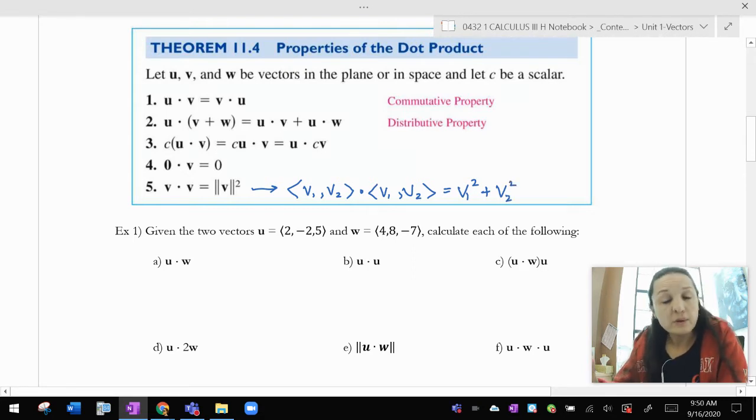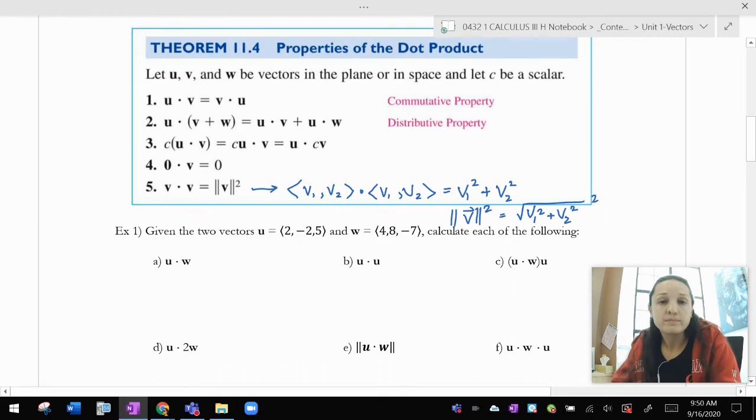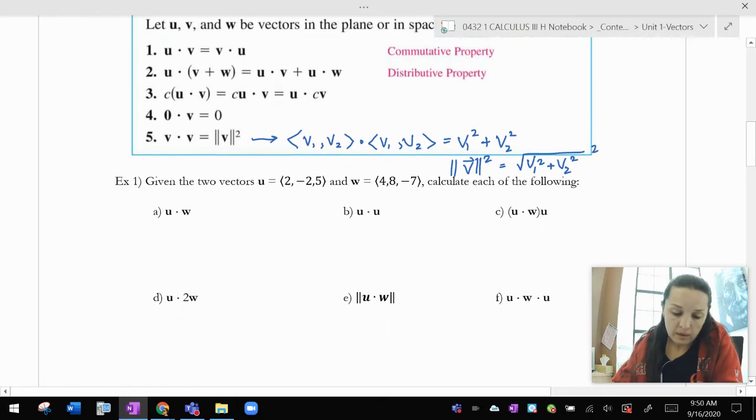Well, I just found the sum of the squares of the components. There's just no square root sign on it, which is why this is the same as the magnitude of v squared, because the magnitude of v would be the square root of v1 squared plus v2 squared, squared. Okay. All right.